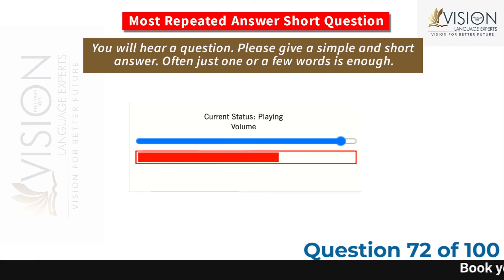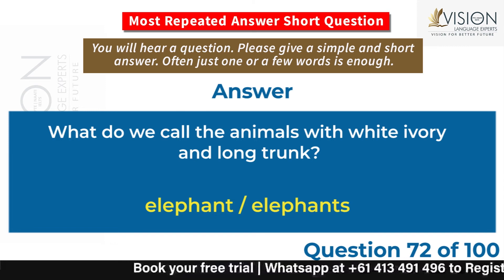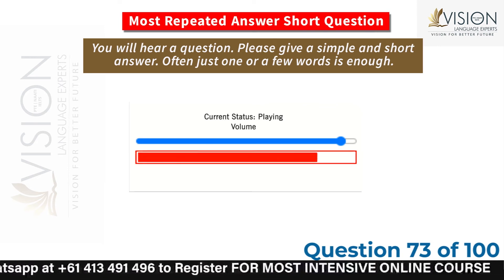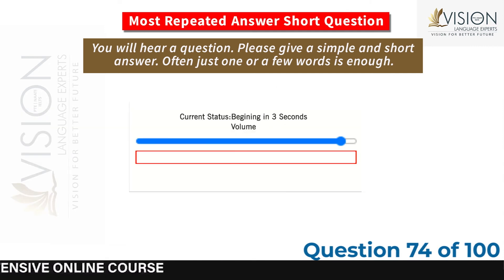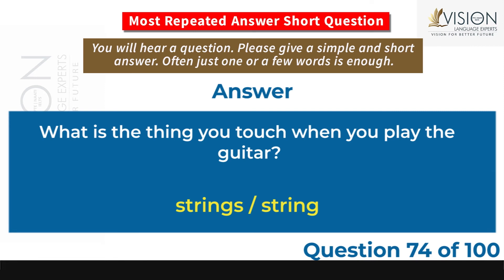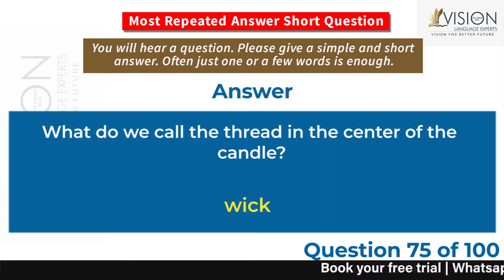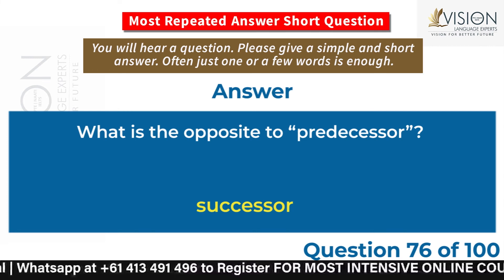What do we call the animals with white ivory and long trunk? Elephant. Which one is past tense: has gone, went, or going? Went. What is the thing you touch when you play the guitar? Strings. What do we call the thread in the center of the candle? Wick. What is the opposite to predecessor? Successor.